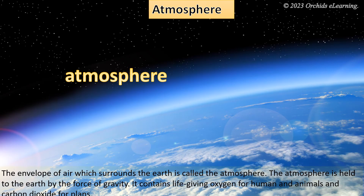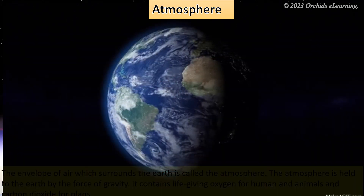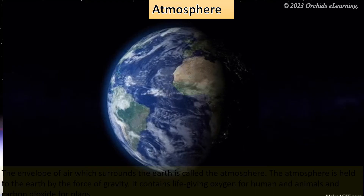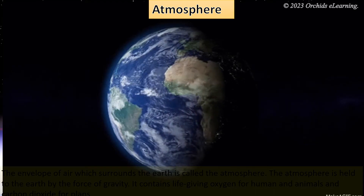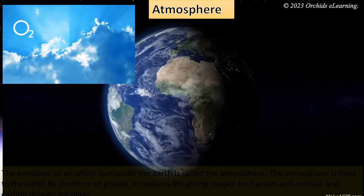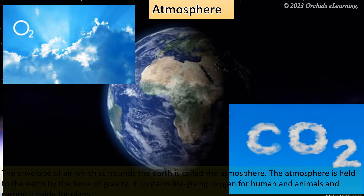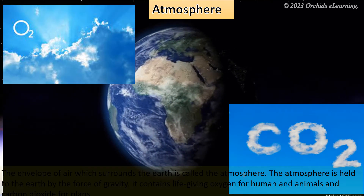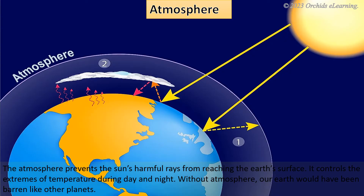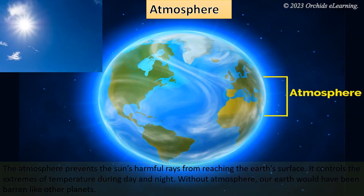The envelope of air which surrounds the Earth is called the atmosphere. The atmosphere is held to the Earth by the force of gravity. It contains life-giving oxygen for humans and animals, and carbon dioxide for plants. The atmosphere prevents the sun's harmful rays from reaching the Earth's surface. It controls the extremes of temperature during day and night.